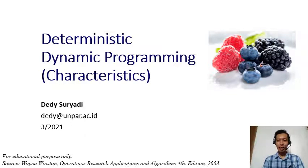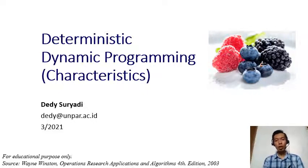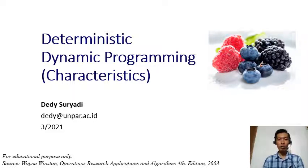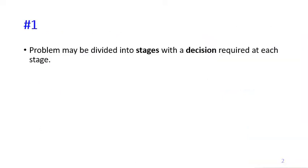This video is important because we're going to talk about the characteristics of dynamic programming. Whenever you solve an optimization problem using dynamic programming, you need to think very carefully about each of these characteristics. The first characteristic is that the problem may be divided into stages.